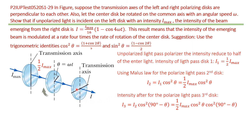For the third disk, we know that it is perpendicular to the first one. Since the second disk makes an angle theta with the first, the third disk makes an angle of 90 degrees minus theta with the second disk. So the intensity is I₃ equal to I₂ times cosine squared of (90° minus theta).